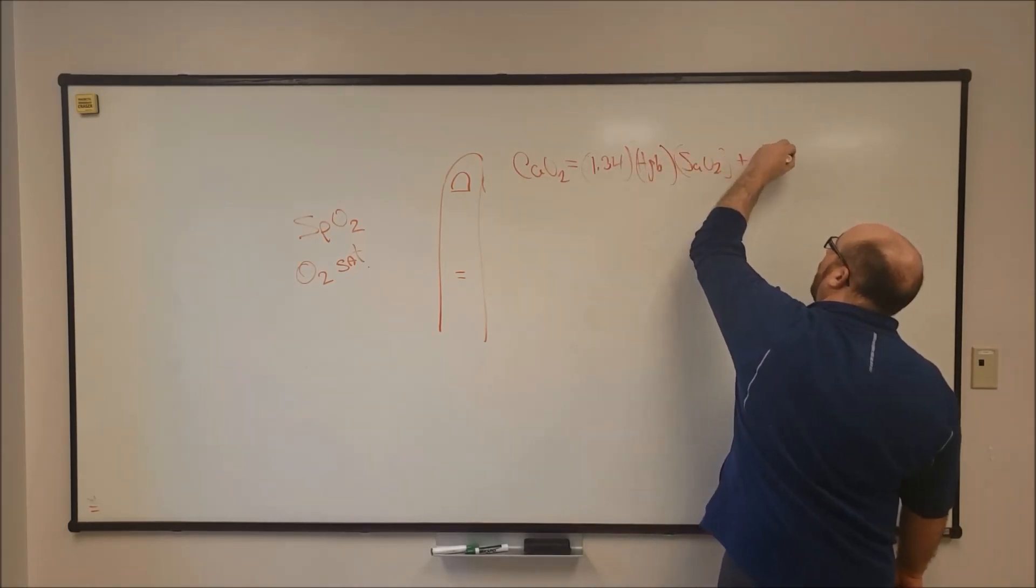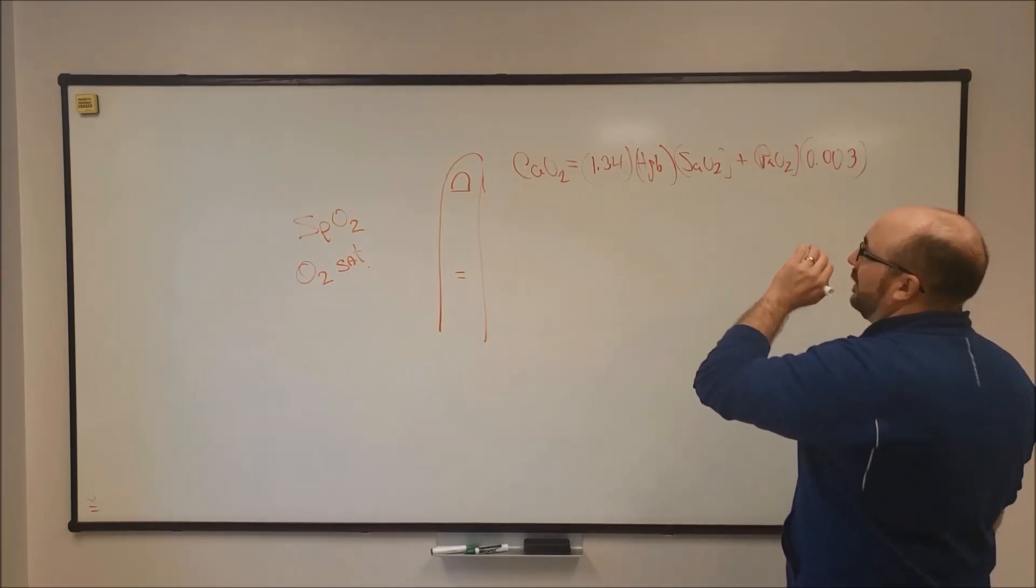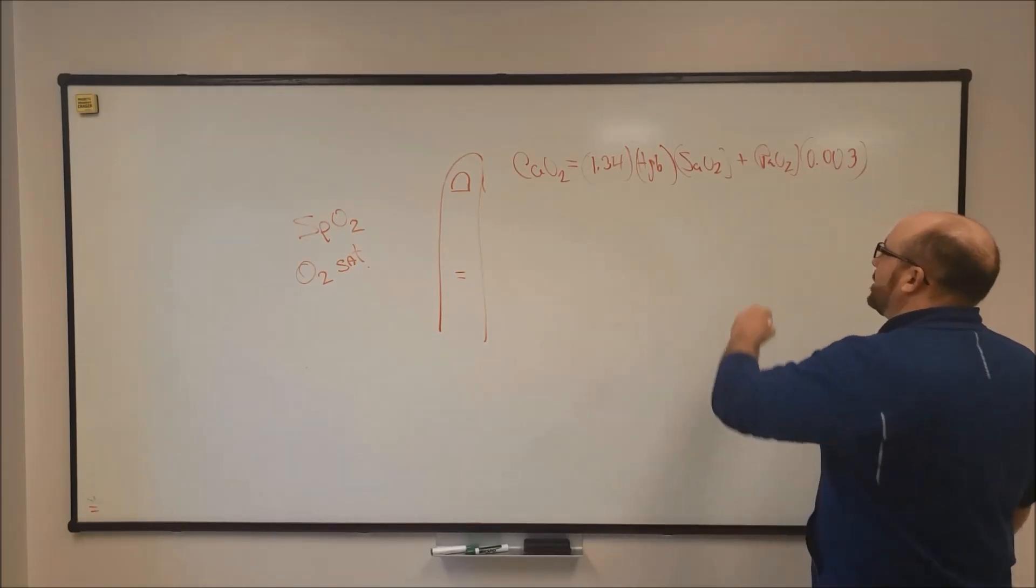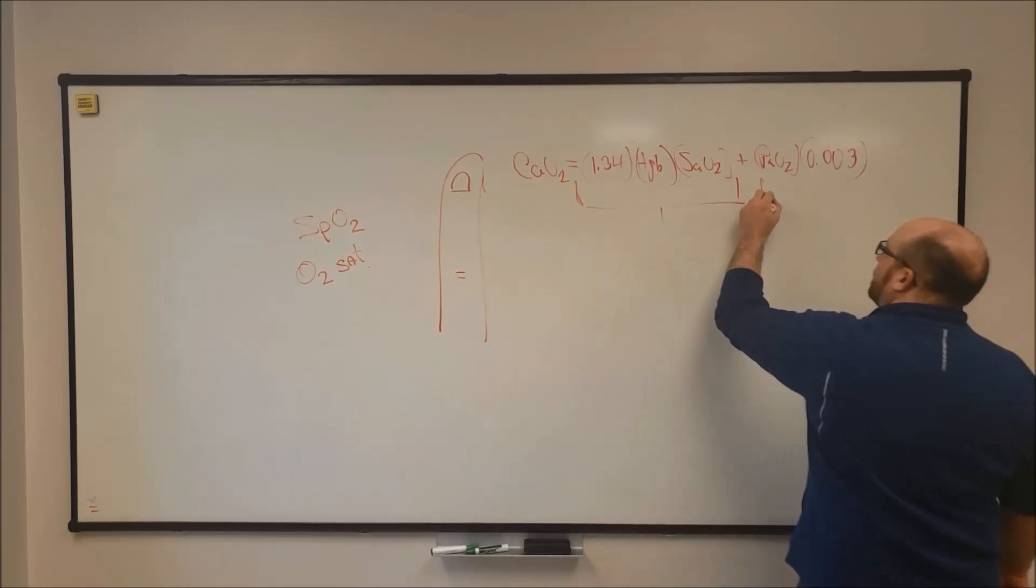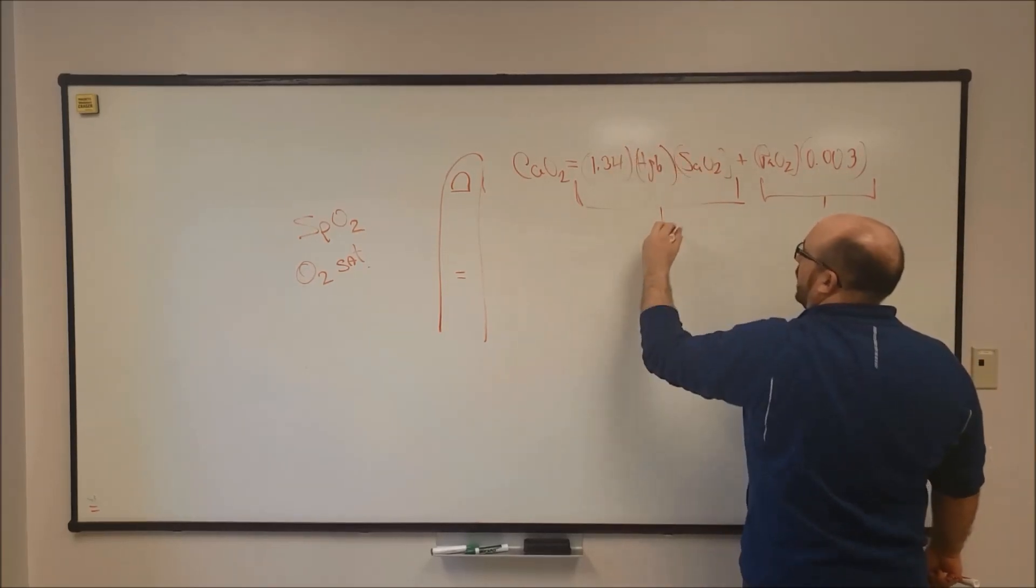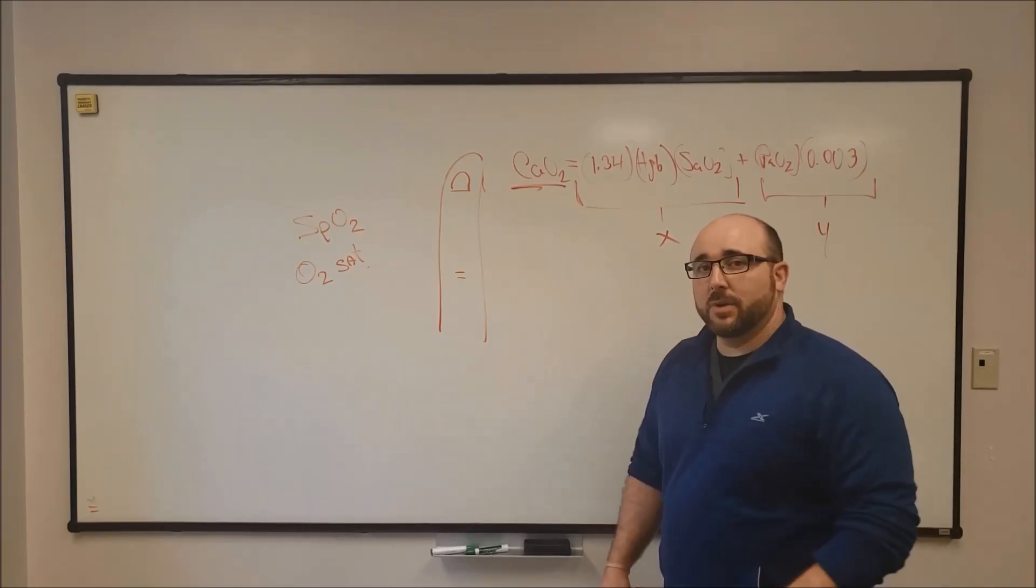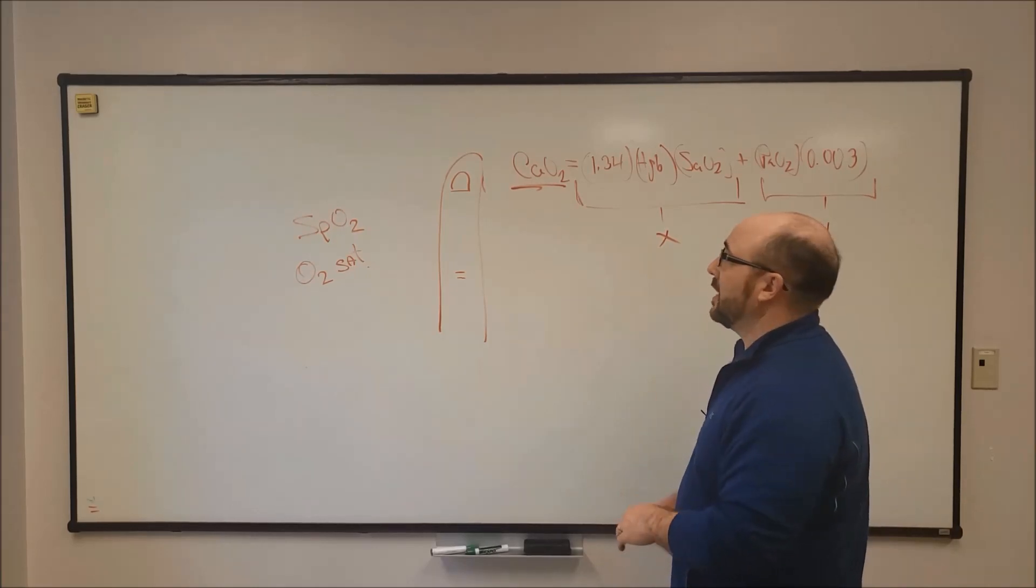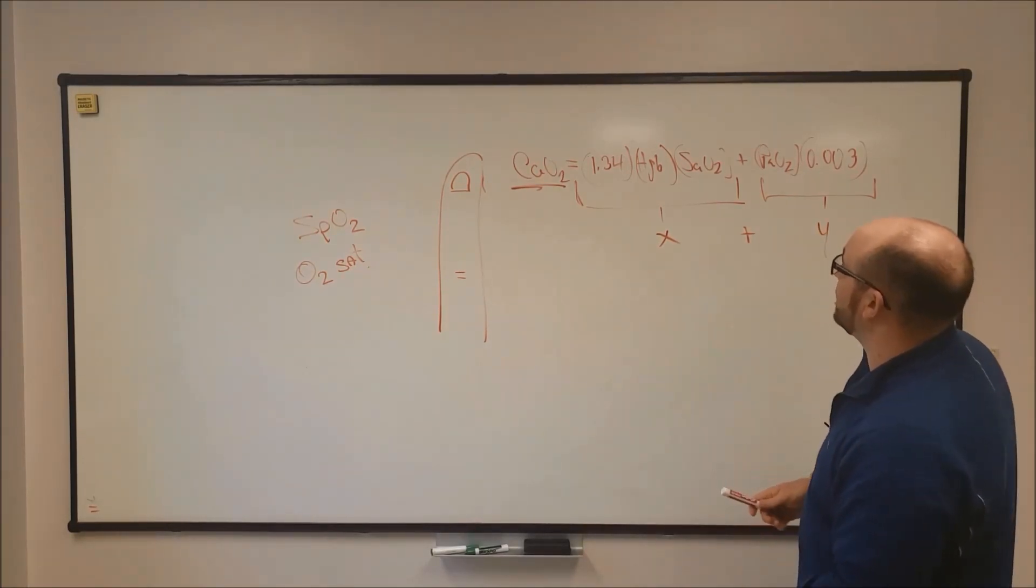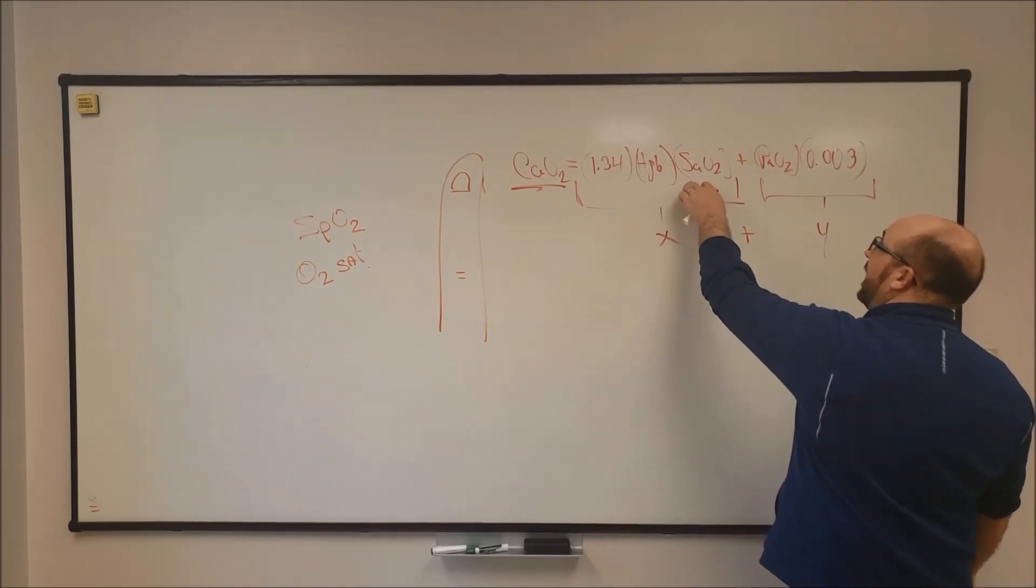1.34 times hemoglobin times SaO2 plus PaO2 times 0.003. So this is the carrying capacity of our blood for oxygen. This is really important. Don't get focused on the formula and how big it is, I just always like to look at both sides of it. So we got two sides: we got our PaO2 level times 0.003 will give us Y, and 1.34 times hemoglobin times sat will give us X. You add those together and it gets your CaO2. This is really what I'm looking at when I'm looking at how well I'm oxygenating my tissues, because we can put oxygen in the lungs all day long, we can actually get it over to the bloodstream sometimes, but we've got to carry it to our tissues for it to work. If you're looking at this equation, which one is way more important, X or Y? All day long you should be saying X. So hemoglobin and sat are way more important than PaO2.